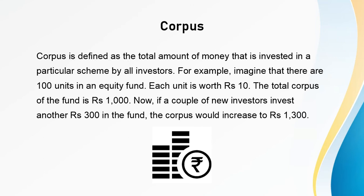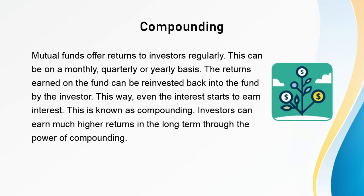Now if a couple of new investors invest another rupees 300 in the fund, the corpus would increase to 1,300 rupees. Next is compounding. Mutual funds offer returns to investors regularly. This can be on a monthly, quarterly, or yearly basis.